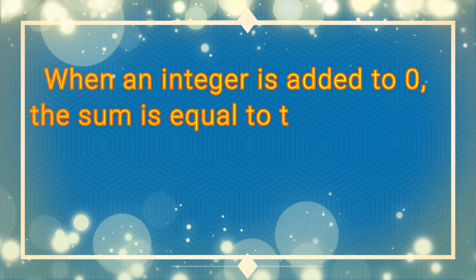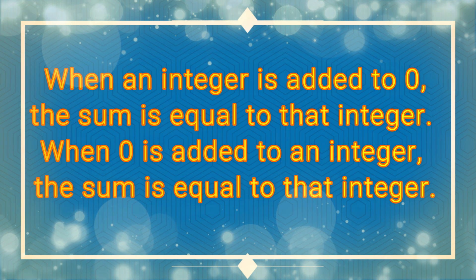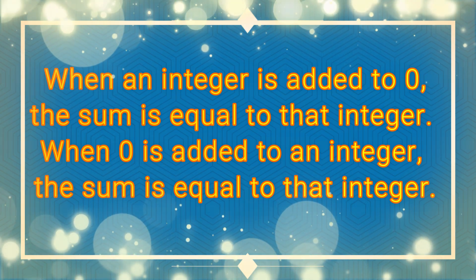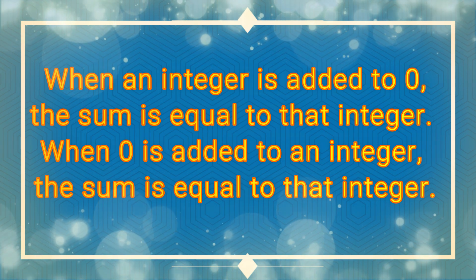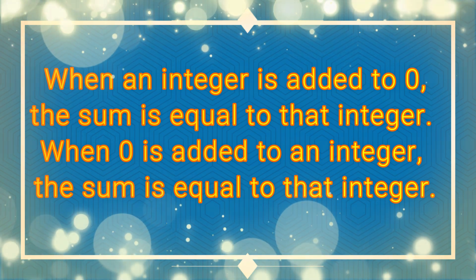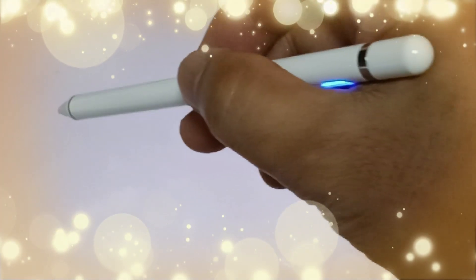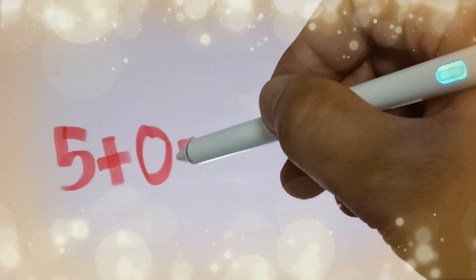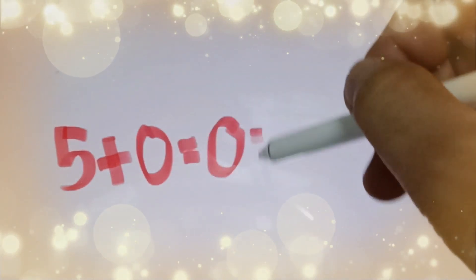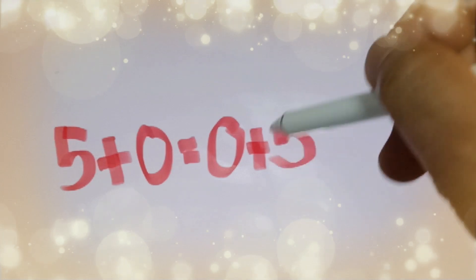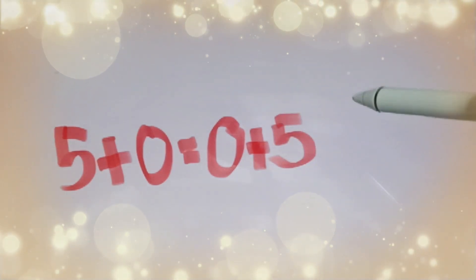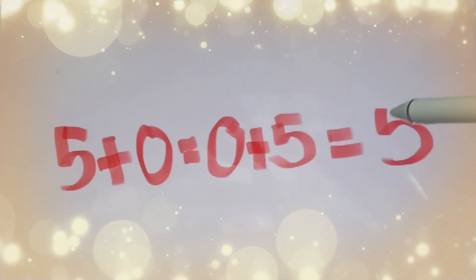In the property of 0, when an integer is added to 0, the sum is equal to that integer. When 0 is added to an integer, the sum is also equal to that integer. For example, 5 plus 0 is equal to 0 plus 5, which is equal to 5.